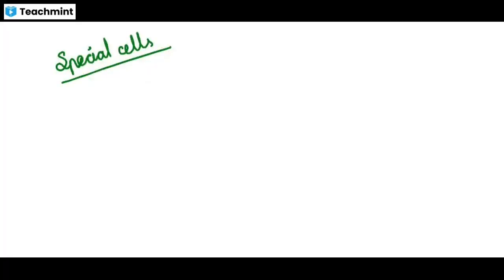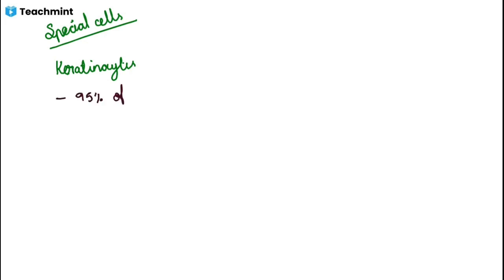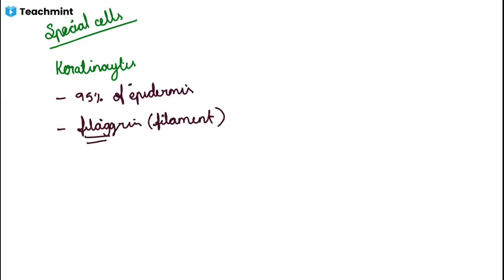Now regarding the special cells in the epidermis: we have melanocytes, Langerhans cells, and Merkel cells — all these cells belong to the epidermis. First come the keratinocytes, which form the major portion — around 95% of the epidermis is formed of keratinocytes only. These keratinocytes contain filaggrin, which is none other than the keratin filaments.